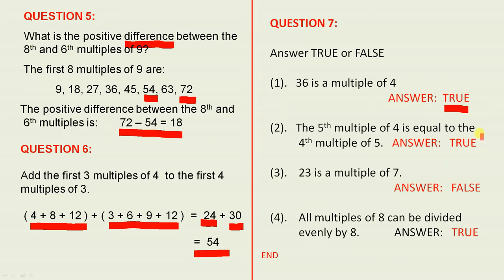The fifth multiple of 4 is equal to the fourth multiple of 5. Is that true or false? The fifth multiple of 4: 4 × 5 = 20. Let's remember that number, 20. The fourth multiple of 5 is 5 × 4 = 20. So they're both equal to 20. So the answer is true.